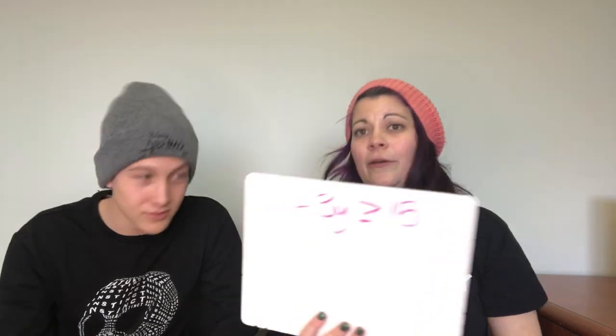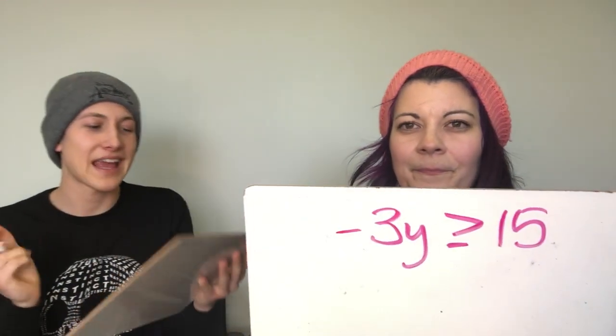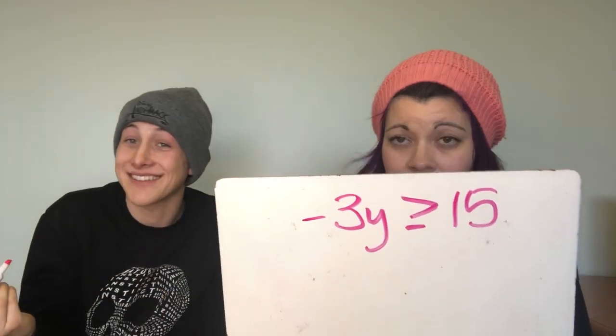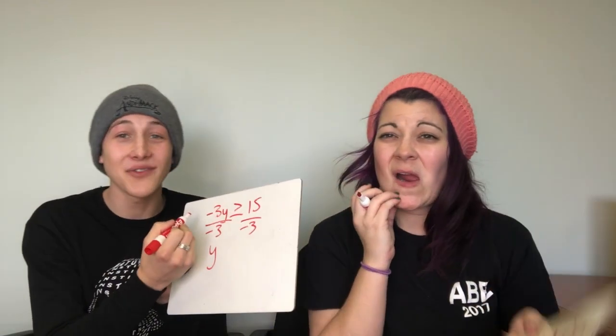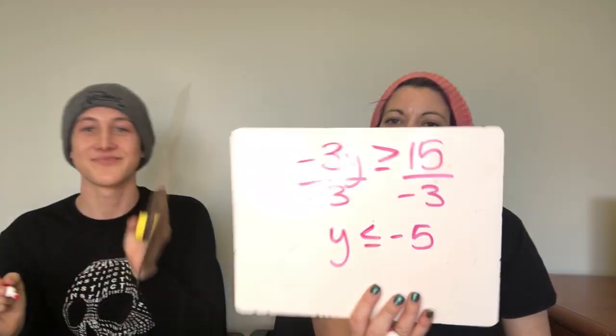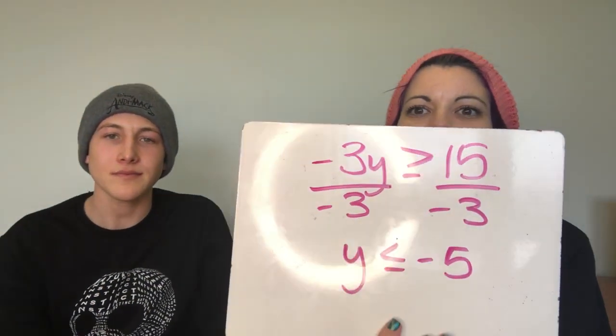You only swap the sign when you divide or multiply by a negative. Now Luke will do this one: negative 3y is greater than or equal to 15. First step is to divide by negative 3 — that's the only step. You isolate y, but since you're dividing by a negative, the sign swaps. 15 divided by negative 3 is negative 5.